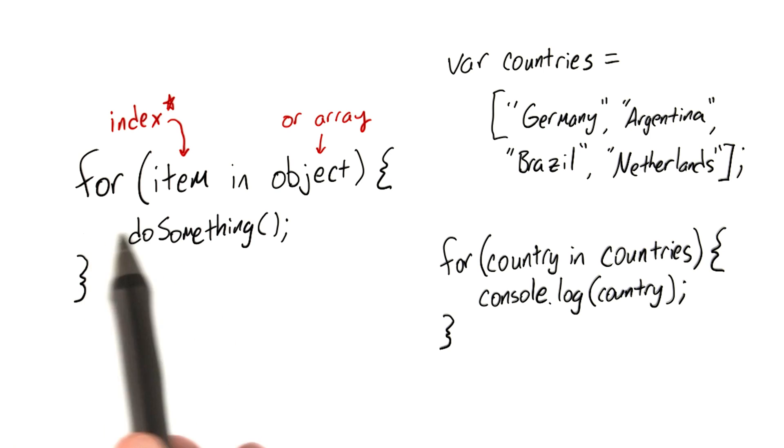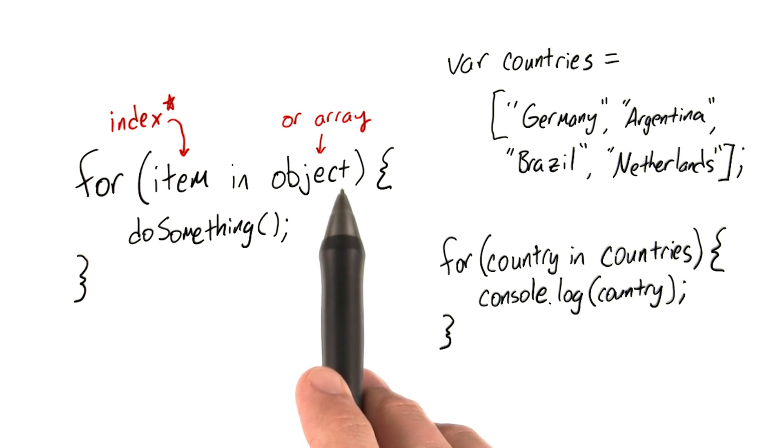So here's one last helpful loop, the for-in loop. For-in loops let us easily iterate through arrays or objects.